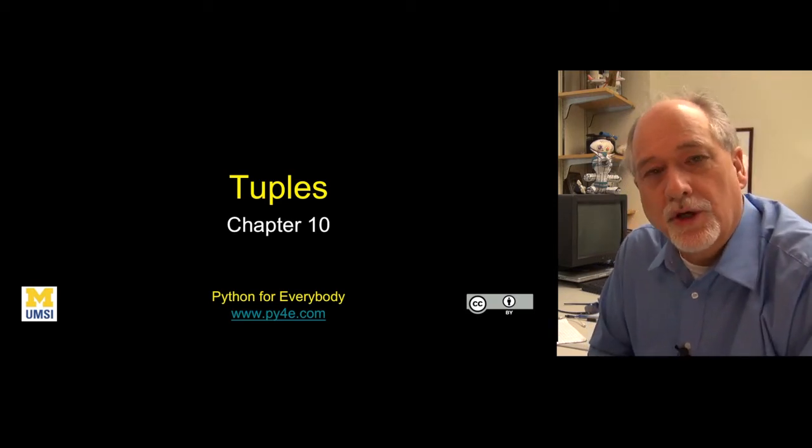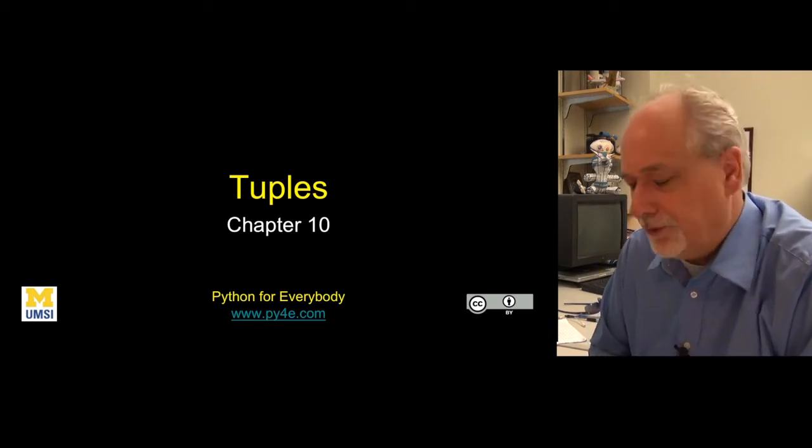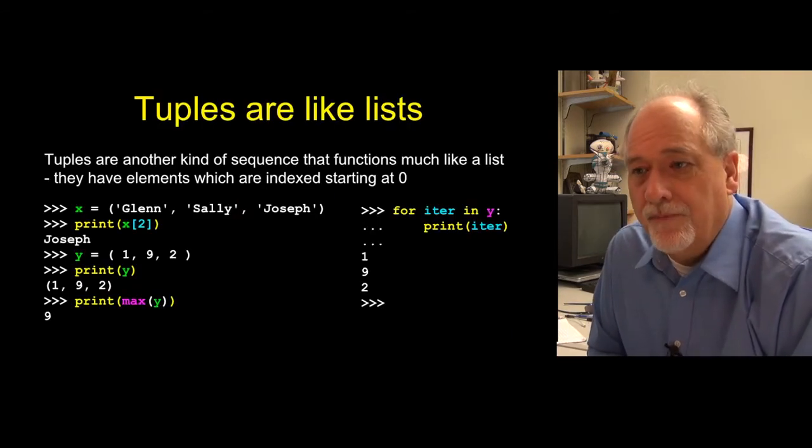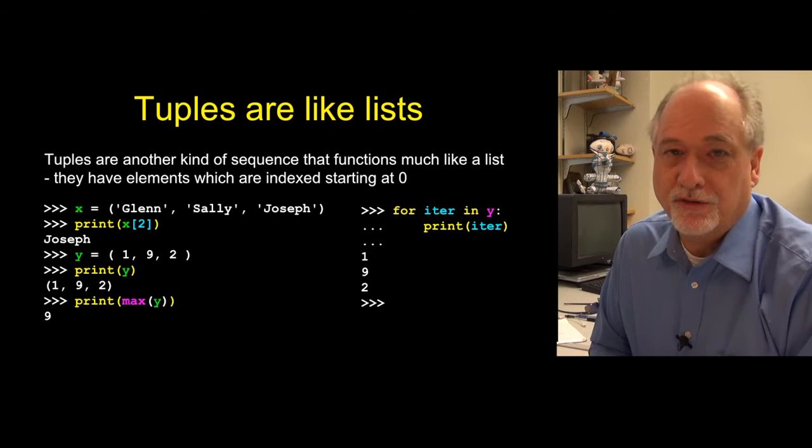Hello and welcome to chapter 10. Now we're gonna talk about our third kind of collection called tuples, but tuples are really a lot like lists. There's not too much to them. They're really kind of a reductionist version of lists.